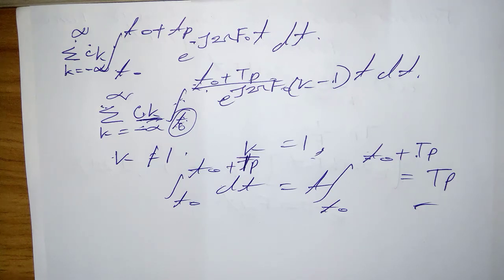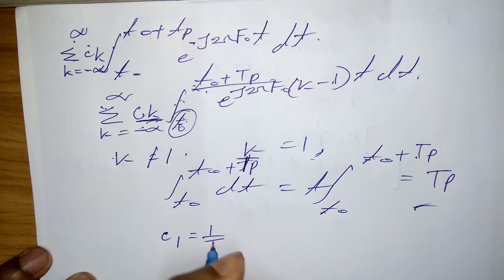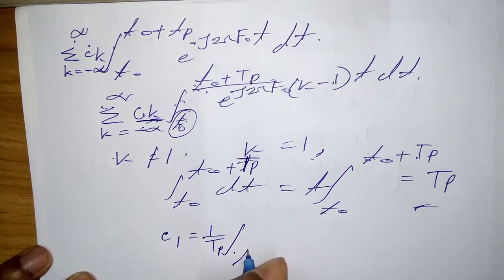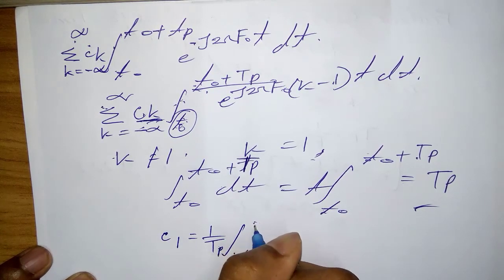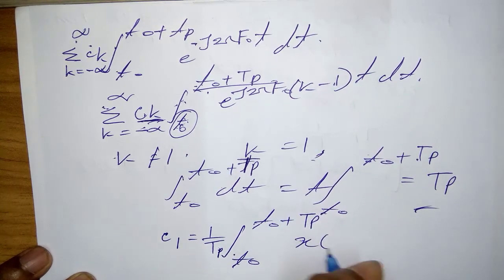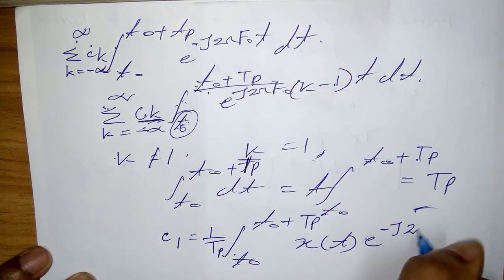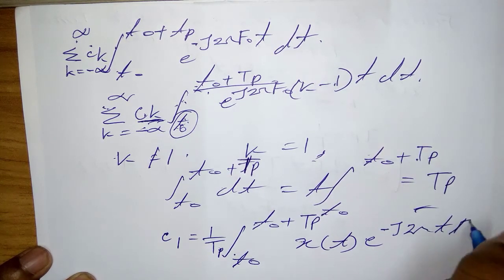for the Fourier coefficients in terms of the given periodic signal becomes: c_l = (1/T_p) times the integral from t₀ to t₀+T_p of x(t) e^(-j2πlf₀t) dt.